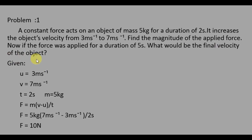This question has two parts. First part, you find out the force. In the second part, you find out the final velocity of the object. First, understand the question. Here, one object has mass 5 kg, and a constant force is acting on the object for a duration of 2 seconds. The velocity increases from 3 m/s to 7 m/s. That is, 3 is the initial velocity U and 7 is the final velocity V. So, write the given values: U = 3 m/s, V = 7 m/s, time T = 2 seconds, M = 5 kg.